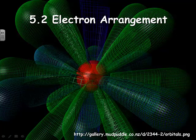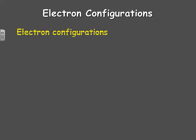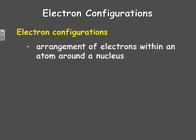Welcome to Section 5.2, where we're going to be studying electron arrangements in atoms. First, we're going to look at electron configurations. What they are is the arrangement of electrons within an atom around a nucleus.